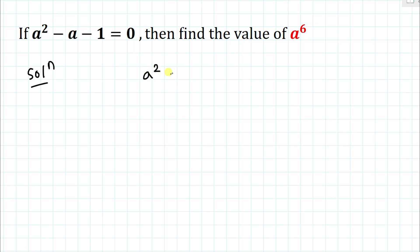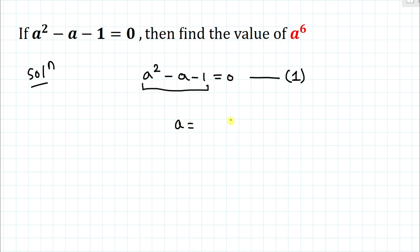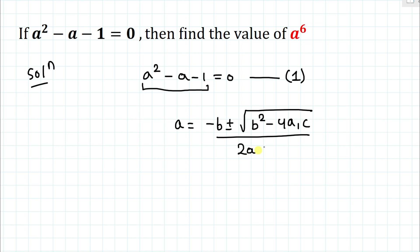We have given a² - a - 1 = 0. Let's take this as equation 1. This is a quadratic equation, so to find the value of a we apply the quadratic formula: a = (-b ± √(b² - 4a₁c)) / (2a₁).